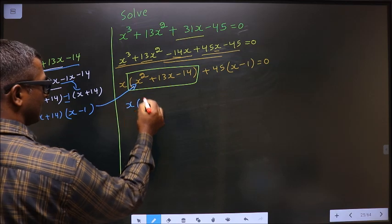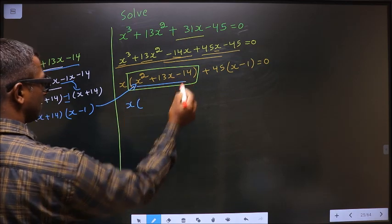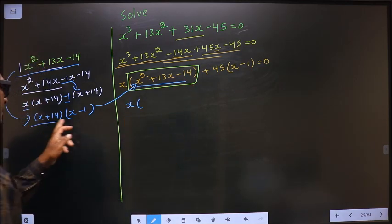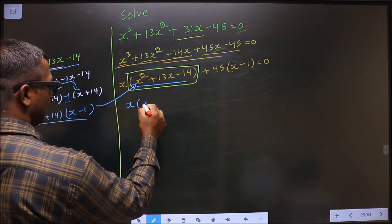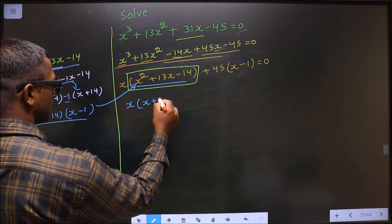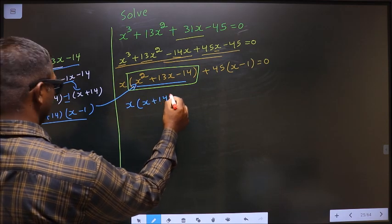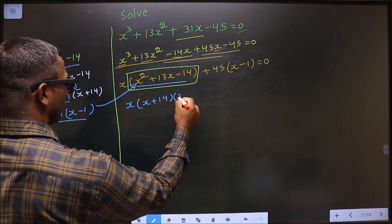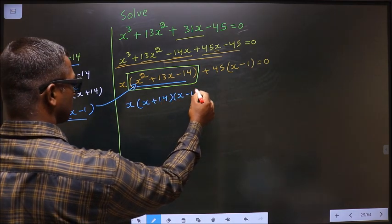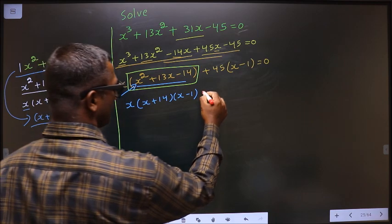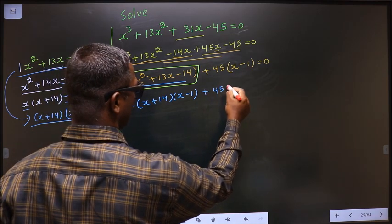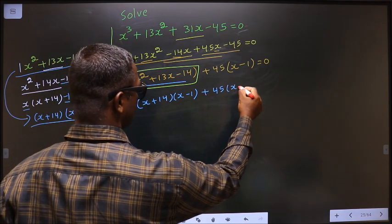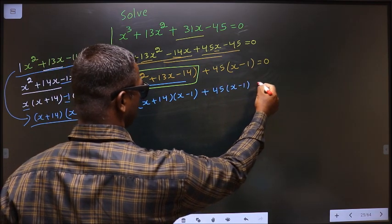So this is x times — in place of this quadratic — x plus 14, x minus 1, plus 45 times x minus 1.